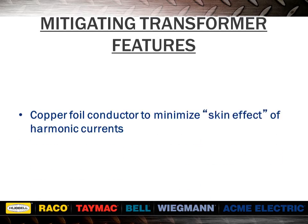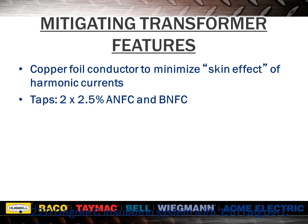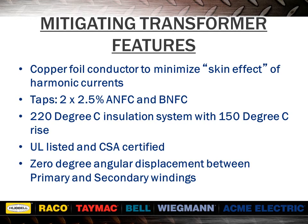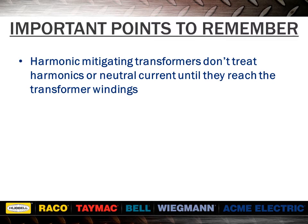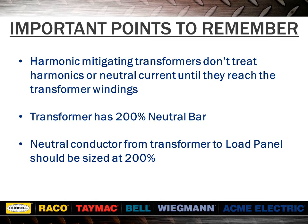Mitigating transformer features include copper foil conductor to minimize skin effect of harmonic currents, two taps at 2.5% above and below nominal, 220 degrees Celsius insulation system with 150 degrees Celsius rise, UL listed and CSA certified, and 0-degree angular displacement between primary and secondary windings. Harmonic mitigating transformers don't treat harmonics or neutral current until they reach the transformer windings, and they include a 200% neutral bar. The neutral conductor from the transformer to the load panel should be sized at 200%.